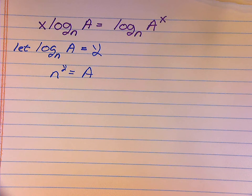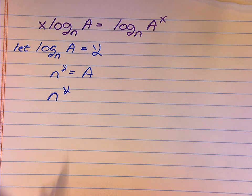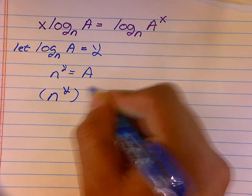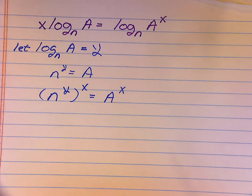Now, according to my property of equations, I can take this one equation and raise both sides to any exponent that I would like to raise it to. Hence, I'm going to take both sides and raise both left and right side to the exponent x. So, I'll end up with n to the y raised to the x equals A raised to the x.